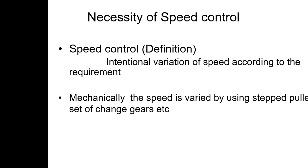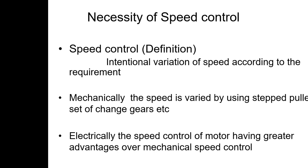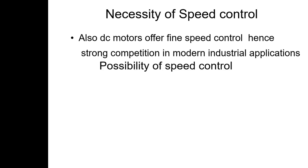Mechanically, the speed is varied by using stepped pulley sets, gearboxes, etc. Electrically, the speed control of a motor has greater advantages over mechanical speed control. The DC motor offers easy speed control, hence DC motors are widely preferred. The speed of DC motors can be controlled very easily, which is why DC motors are widely used. DC motors also offer fine speed control, hence strong competition in modern industrial applications.